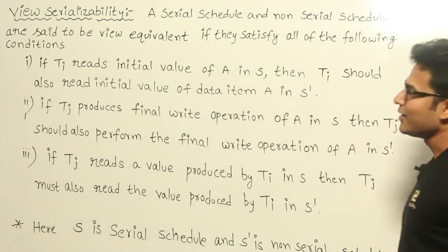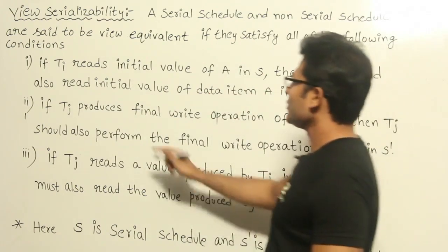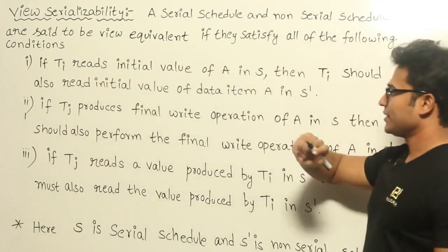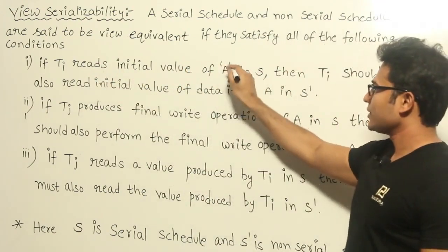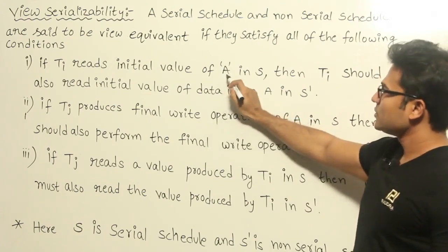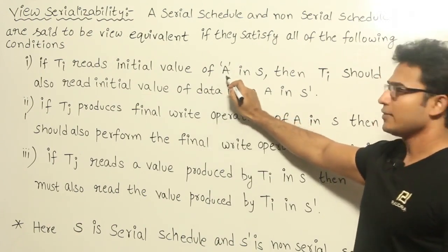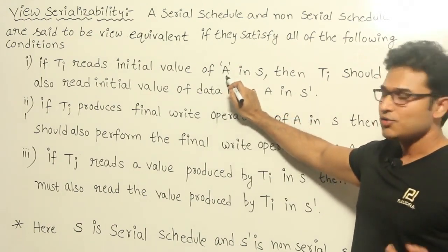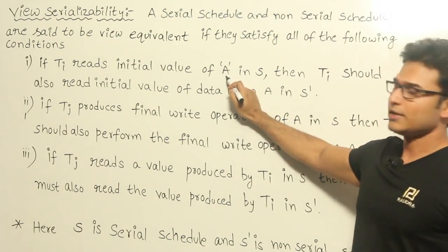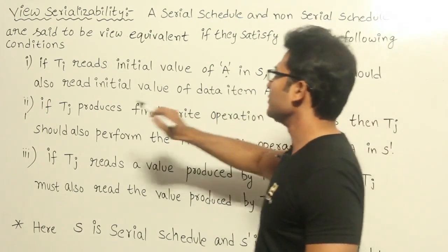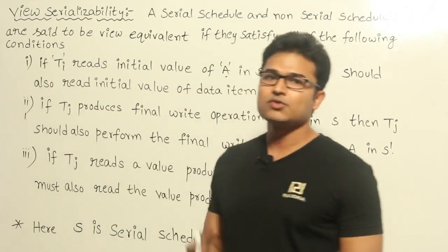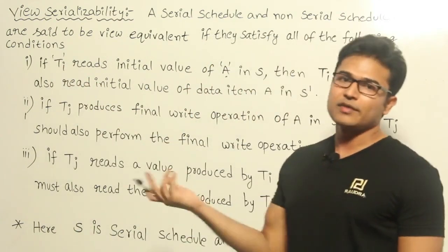What does it mean? If TI is going to read a value in schedule S — let us say the data value is A — whoever reads the initial value of A in one schedule should also read the initial value of A in the other schedule. That is the simple meaning of it: whoever reads it first should read it first in the other side.